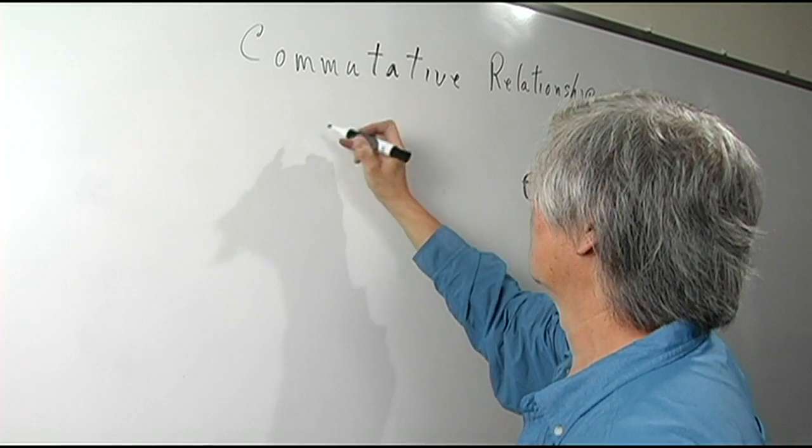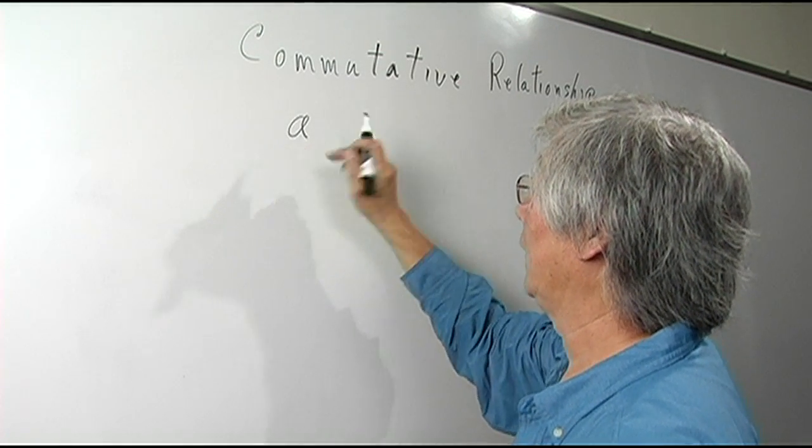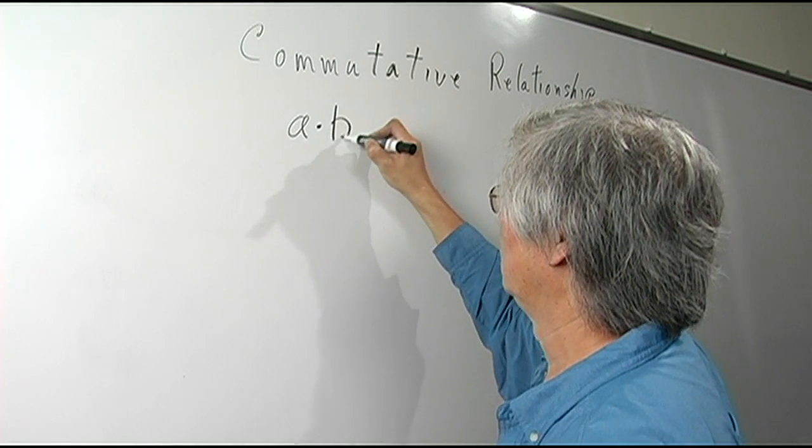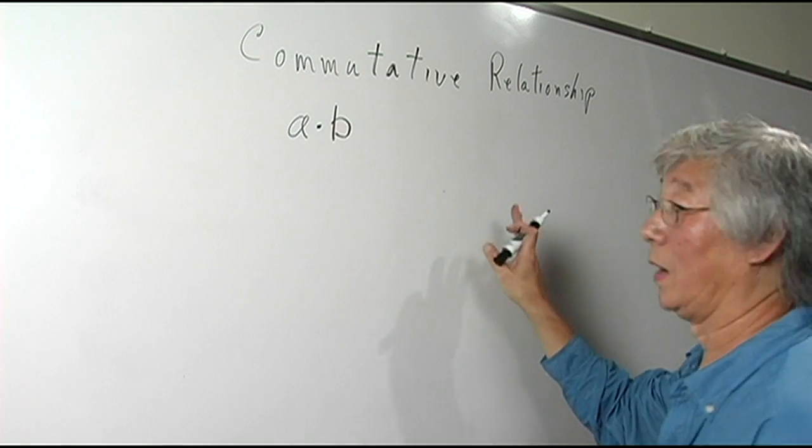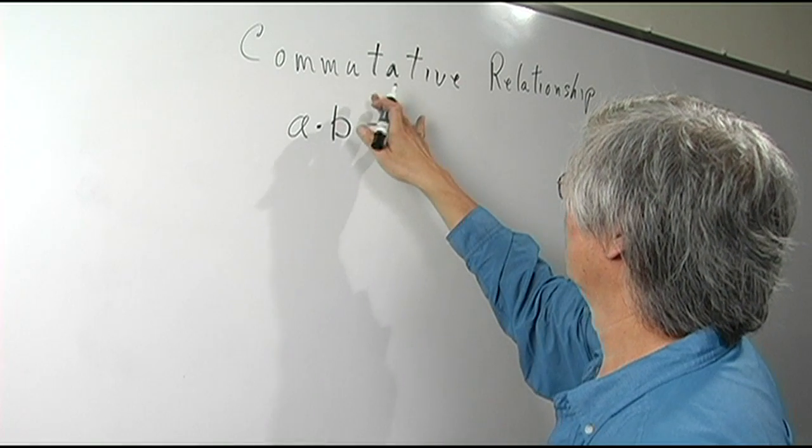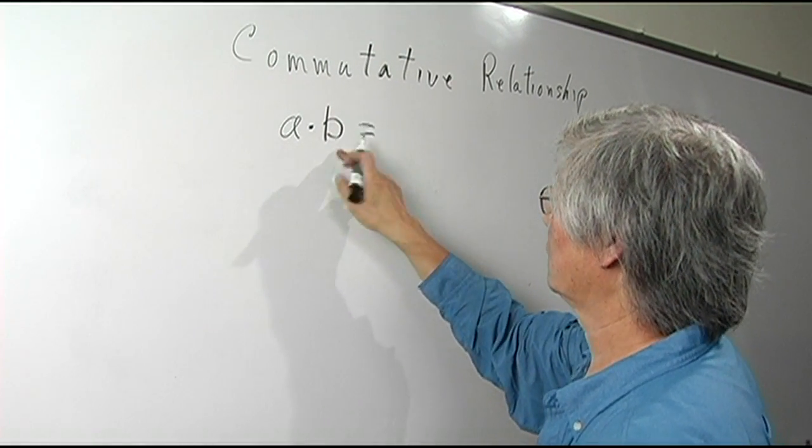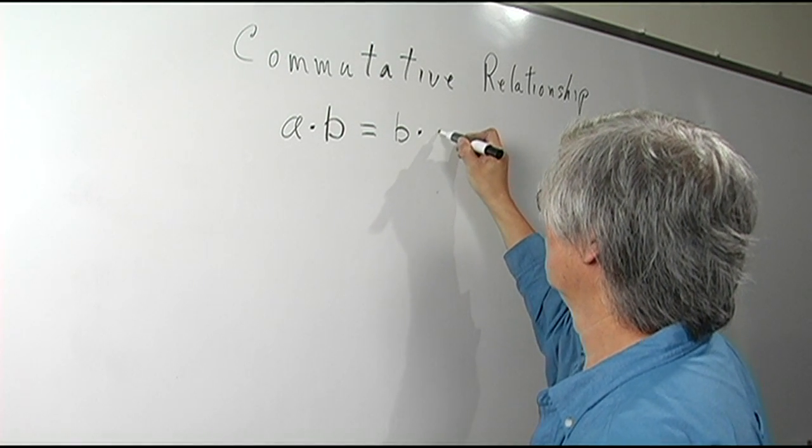Let's talk about the multiplication first. I'm going to talk about A times B, two variables. A times B - we don't know what they are, it doesn't really matter. The commutative property says that A times B is equal to B times A.